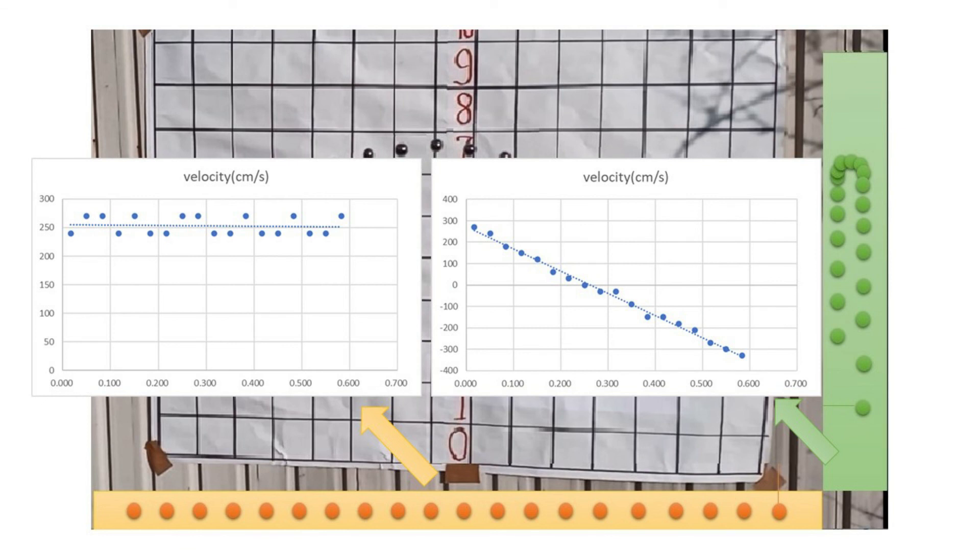No force works in the horizontal direction. It moves at constant velocity. Gravity works in the vertical direction. The velocity changes at a constant rate.